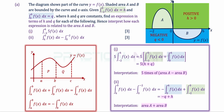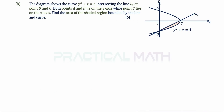Now moving to part B, we need to find the area of the shaded region in peach bounded by line L1 and the curve. The strategy is to integrate the curve with respect to the y-axis to find the large area, then subtract the integration of the line, which gives the area of the triangle. The big area minus the white triangle area yields the shaded peach region.